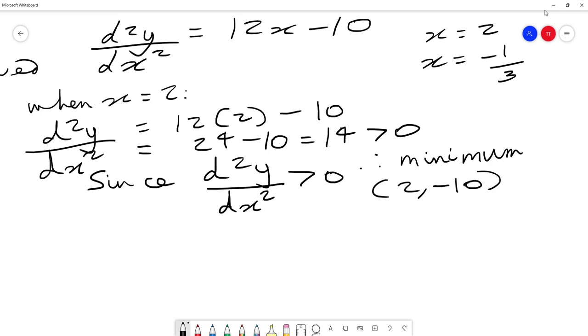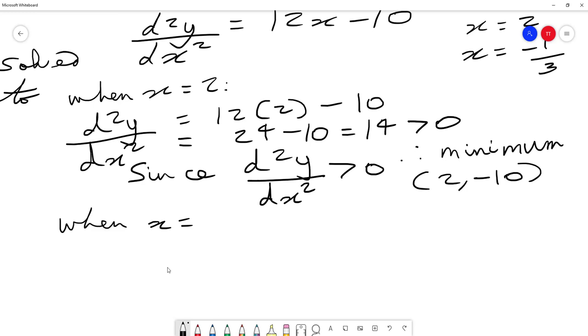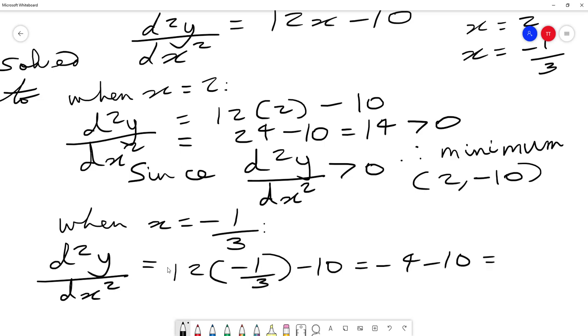Now when we substitute the second value, minus a third, we get d²y/dx² equals 12 times minus a third minus 10. That gives minus 4 minus 10, which is minus 14. Now this is negative.